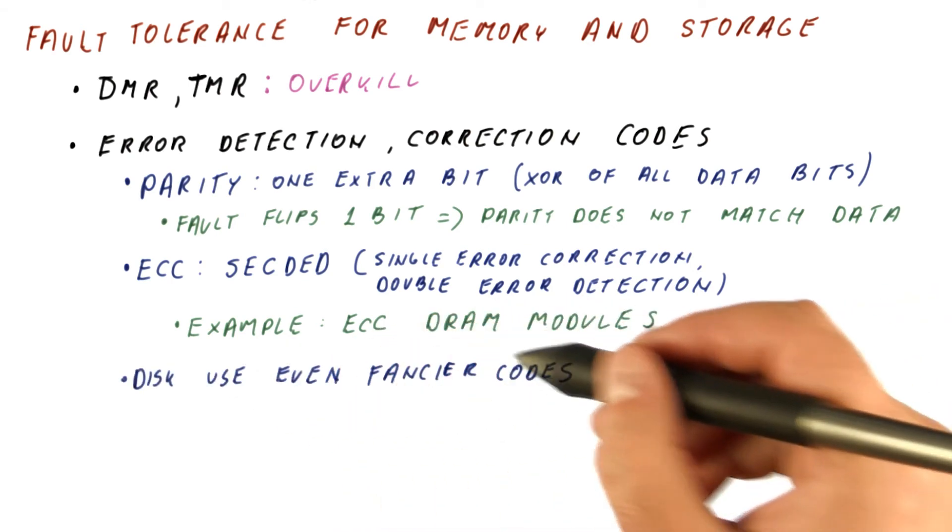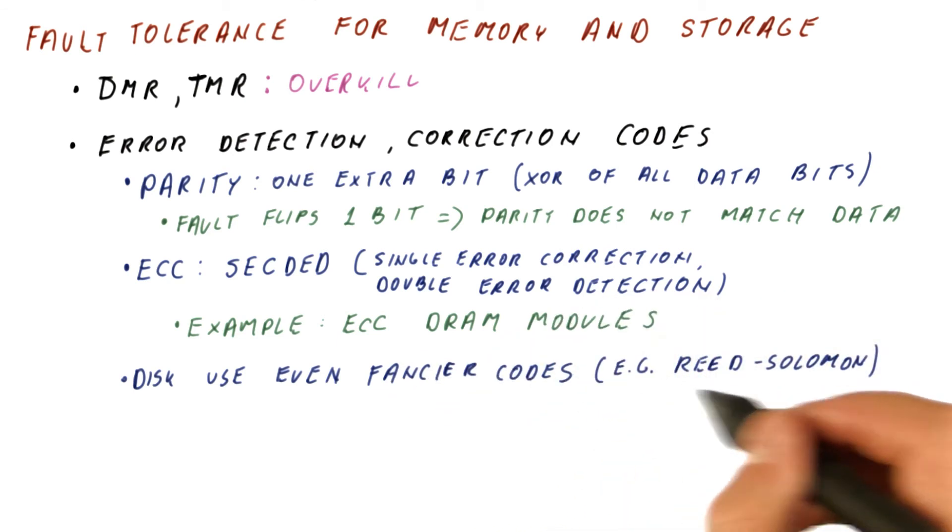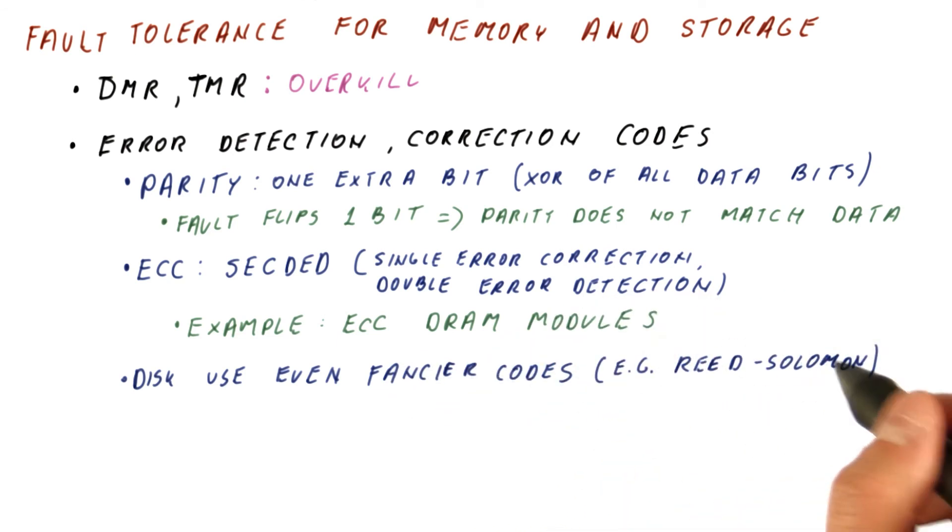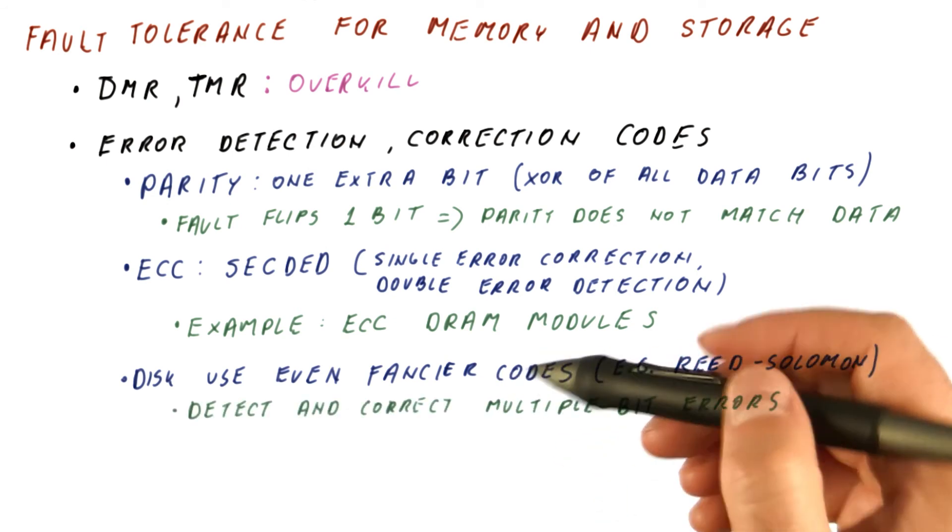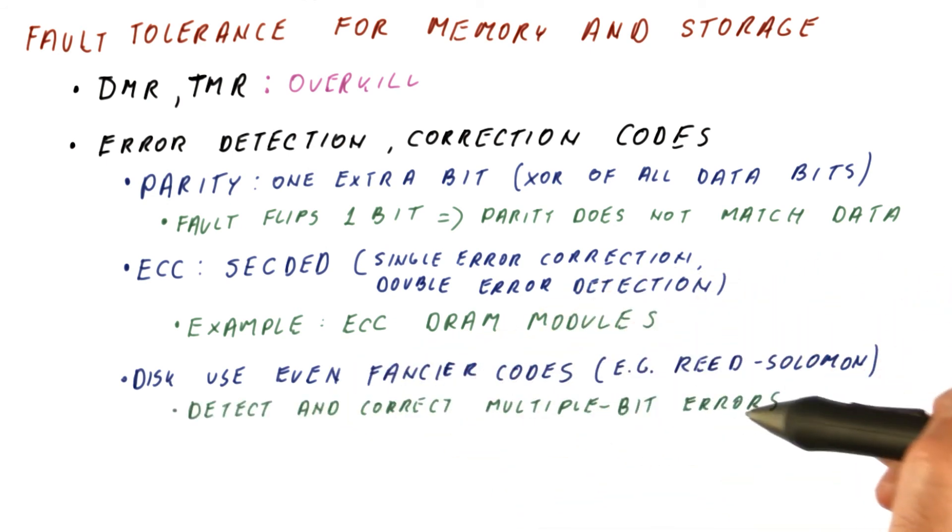Hard drives use even fancier codes, such as Reed-Solomon codes, that I'm not going to go into here. These codes can detect and correct multiple bit errors.